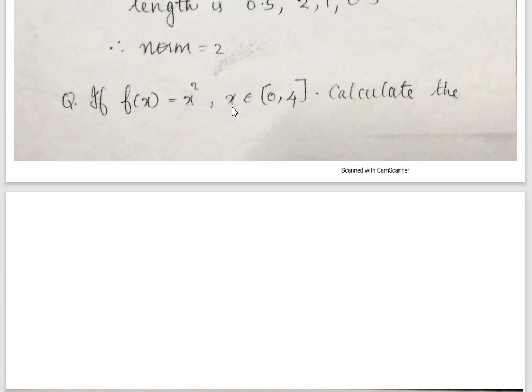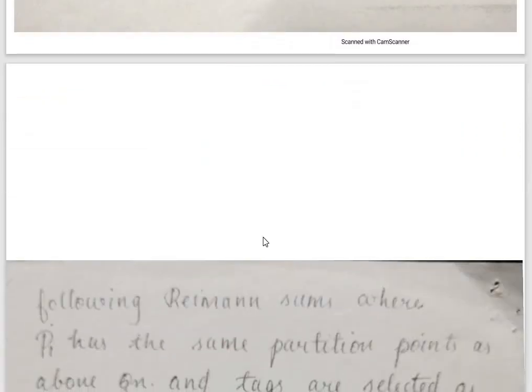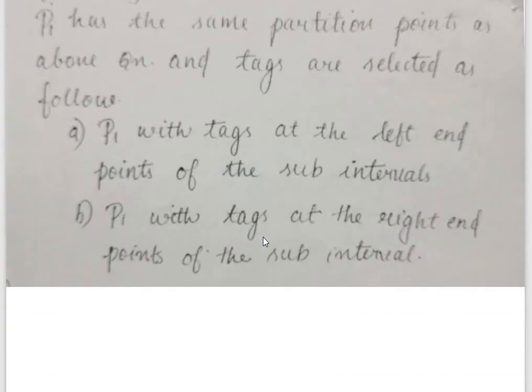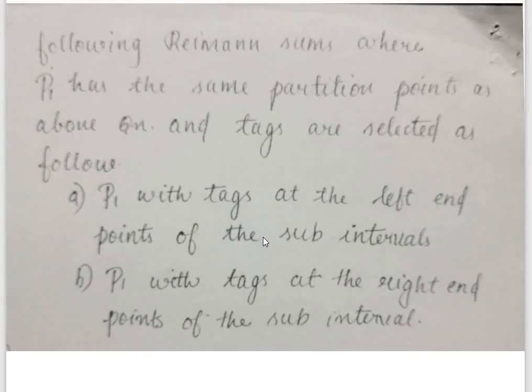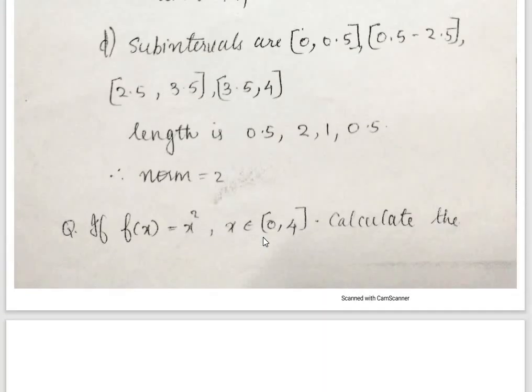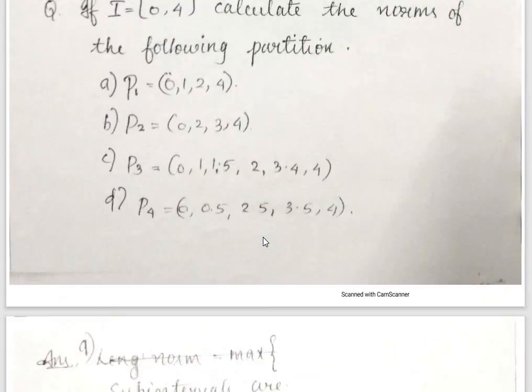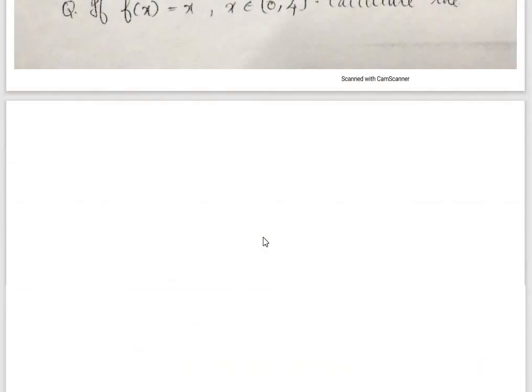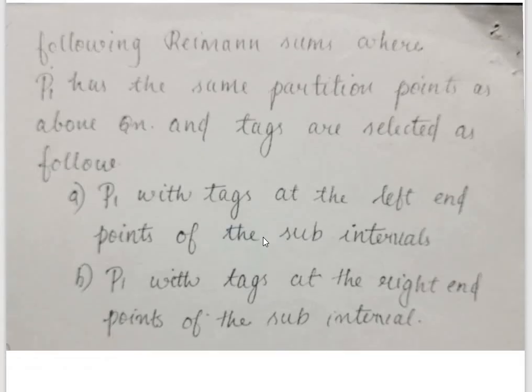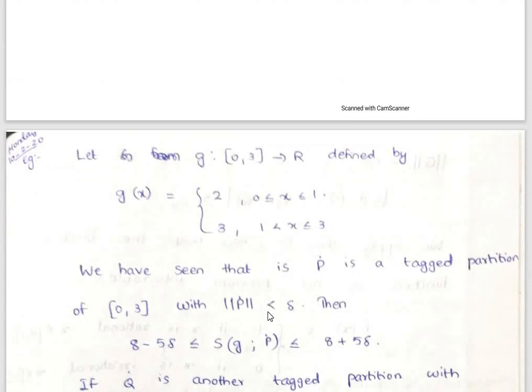Let f(x) = x² on [0,1]. Calculate the Riemann sum for the given partition. We consider the tagged partition with tag at the left endpoint and at the right endpoint. That's the symbol used.